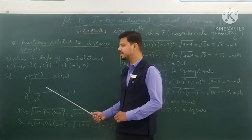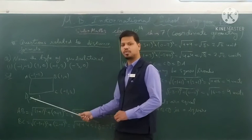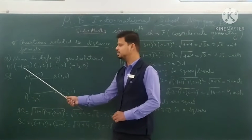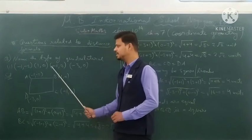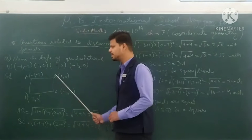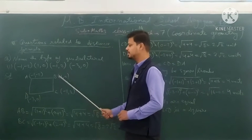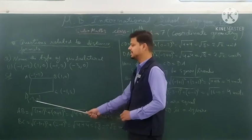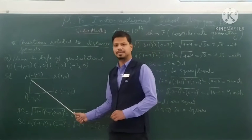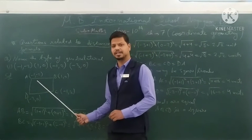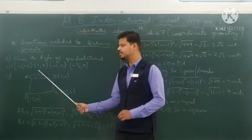We draw a rough diagram of quadrilateral ABCD, where A, B, C, D are the four vertices. Vertex A is (−1, −2), vertex B is (1, 0), vertex C is (−1, 2), and vertex D is (−3, 0). From this rough diagram we can set up the quadrilateral and place the coordinates.